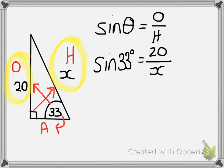Like before, to get rid of the x on the right hand side of the equation, we've got to times both sides of the equation by x.